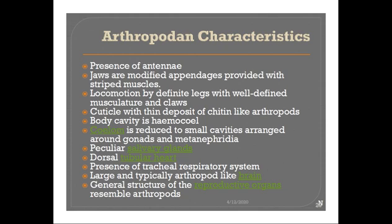The second arthropodian character is jaws or mandibles. We have learned about mandibles in the case of the cockroach and similar arthropods. A similar kind of mandible or jaws are present in Peripatus as well. That is the second character which relates the Peripatus with the Arthropoda.